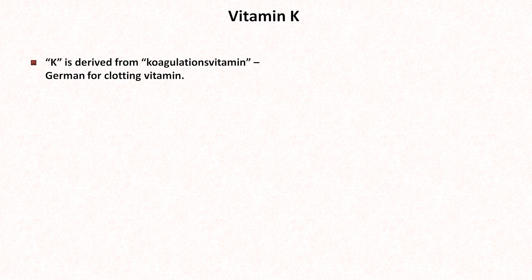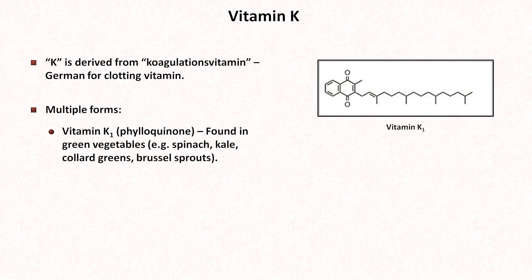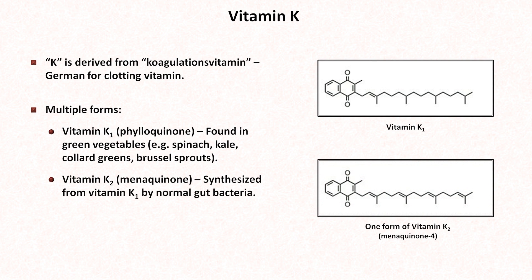The final topic to discuss is the important role that vitamin K plays in the coagulation cascade. In fact, the K of vitamin K is derived from 'koagulations-vitamin,' which is the German word for clotting vitamin. There are multiple types of naturally occurring vitamin K. Vitamin K1, also known as phylloquinone, is found in green vegetables with the highest concentration in spinach, kale, collard greens, and Brussels sprouts. In addition, there is vitamin K2, known as menaquinone, which is synthesized from vitamin K1 by normal gut bacteria. There are many similar forms of vitamin K2, which are named after the number of double bonds present on the side chain.